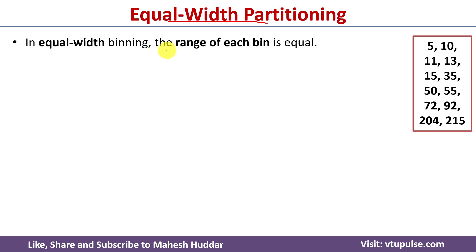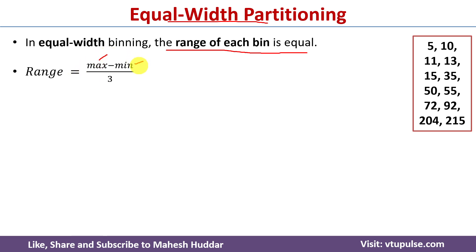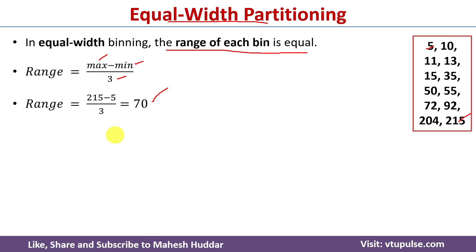Next we will go for equal width partitioning. In equal width partitioning, the range of each bin is equal. We need to find the range using the formula: range equals maximum value minus minimum value divided by the total number of bins, which is 3. Here the maximum value is 215 and minimum value is 5, so 215 minus 5 divided by 3 equals 70.